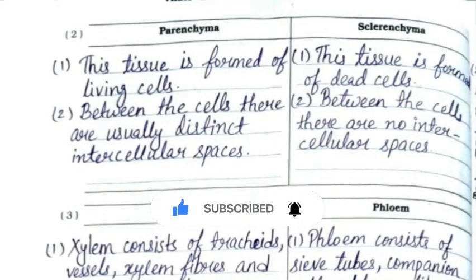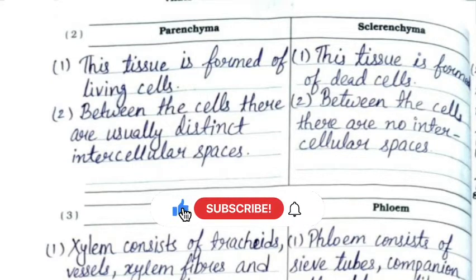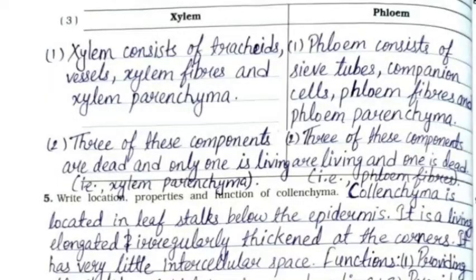Difference between parenchyma and sclerenchyma: parenchyma tissue is formed of living cells while sclerenchyma tissue is formed of dead cells. In parenchyma there are distinct intercellular spaces between cells, whereas in sclerenchyma there are no intercellular spaces. Difference between xylem and phloem: xylem consists of tracheids, vessels, xylem fibers, and xylem parenchyma - three components are dead and one is living. Phloem consists of sieve tubes, companion cells, phloem fibers, and phloem parenchyma - three are living and one is dead.